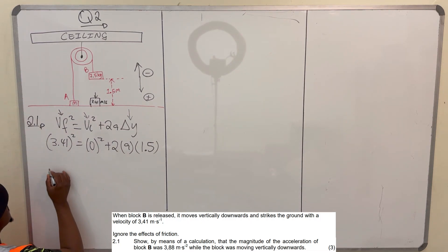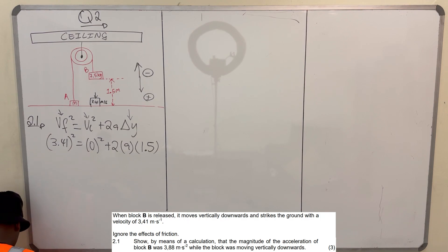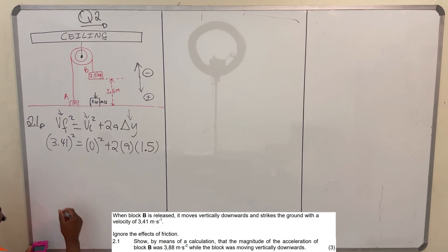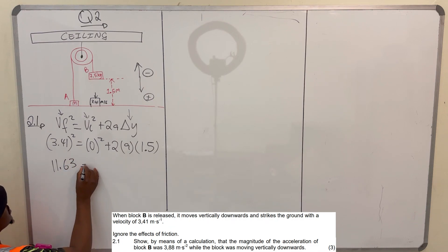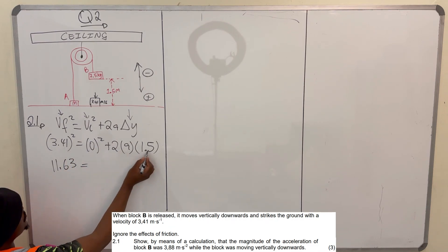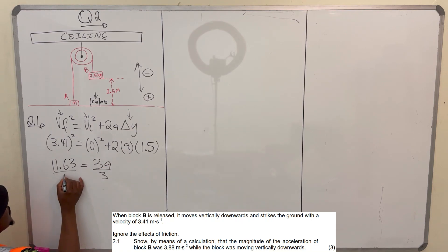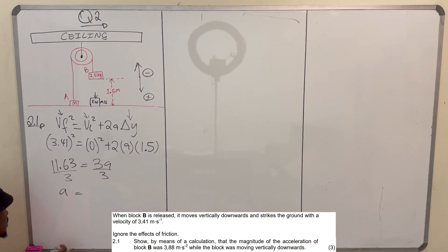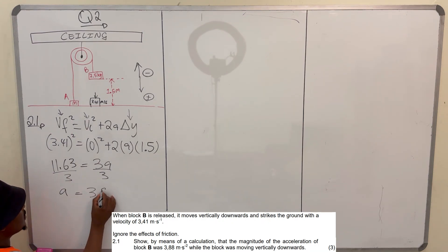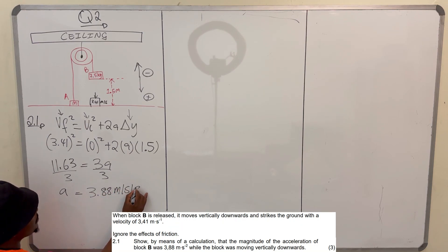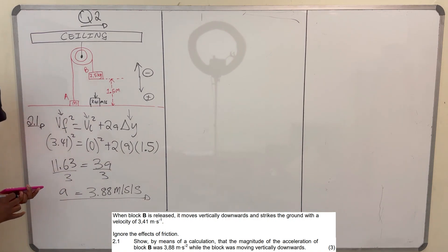So 3.41 squared is 11.63, which equals 2 times 1.5, giving us 3a. Dividing both sides by 3, we get a = 3.88 meters per second squared, which is exactly what they wanted us to prove. So we're done with question 2.1.